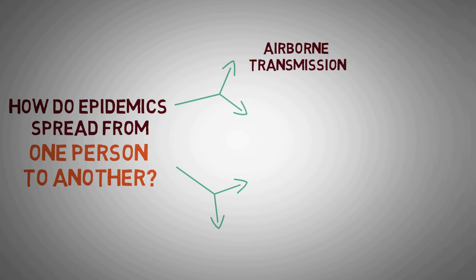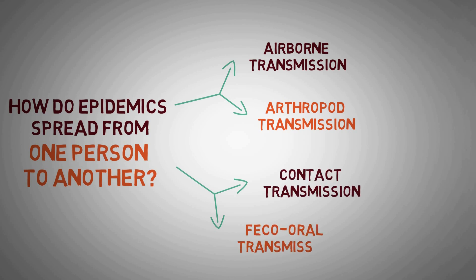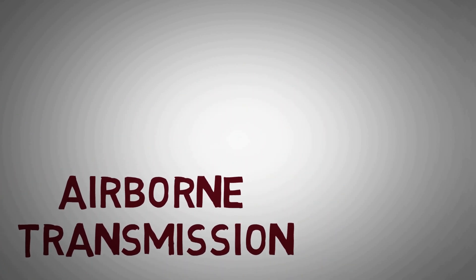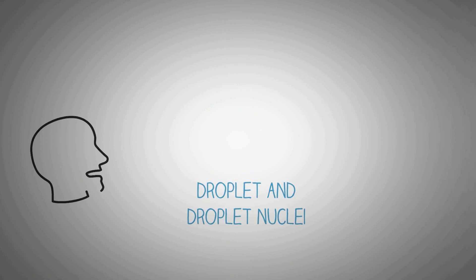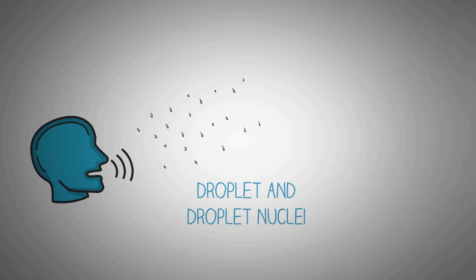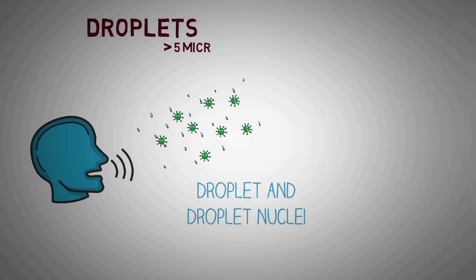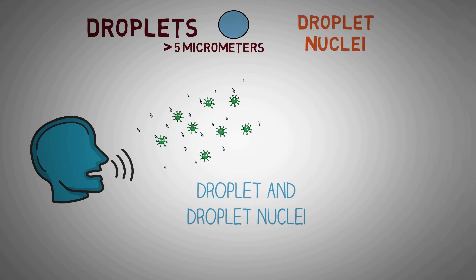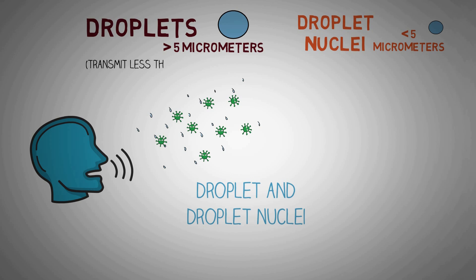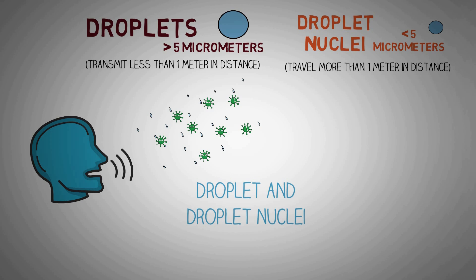There are numerous ways a disease can spread. Some of the most common are airborne transmission, arthropod transmission, contact transmission, and feco-oral transmission. Airborne transmission is the spread of infection by droplet nuclei or dust in the air. Whenever an infected person coughs or sneezes, small droplets of water are released containing millions of viral particles. These are called droplets if more than 5 micrometers in diameter, and droplet nuclei if less than 5 micrometers. Droplets fall rapidly to the ground under gravity and are transmitted only over less than 1 meter. Droplet nuclei, on the other hand, can remain suspended in the air for significant periods and travel distances greater than 1 meter, and are then inhaled by another person who becomes infected.